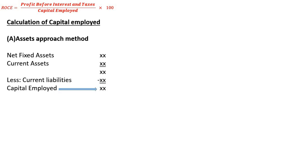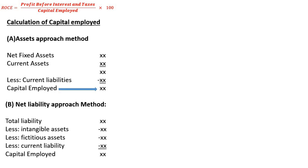Under the liability approach, we take total liabilities and deduct intangible assets, fictitious assets, and current liabilities. The remaining amount is referred to as capital employed. While calculating capital employed, we should remember to exclude: idle assets, intangible assets, absolute assets and obsolete stock, investments outside the business, fictitious assets like accumulated losses, discount on issue of shares or debentures, and preliminary expenses.